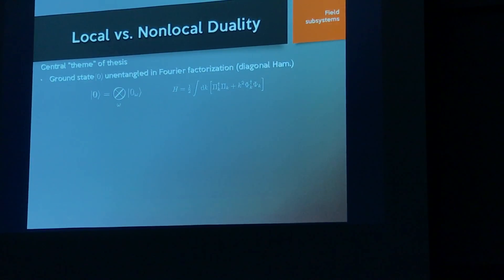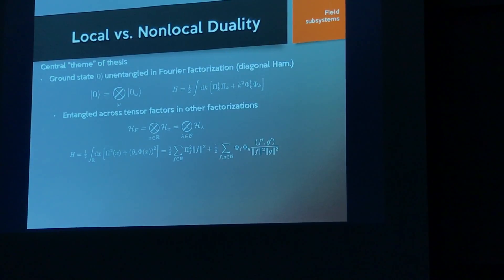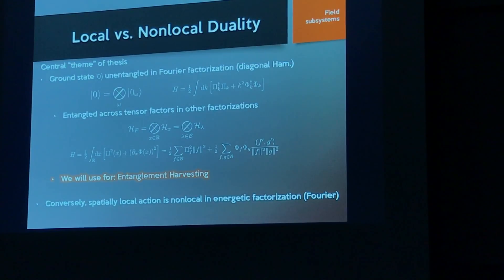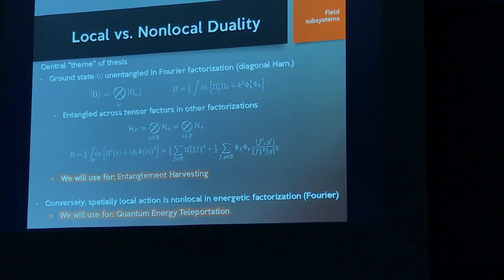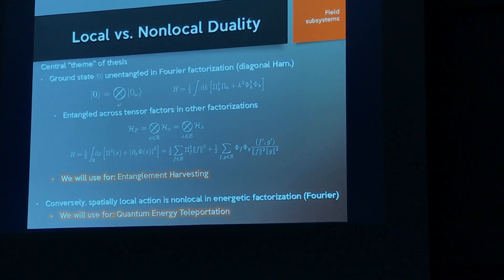The central theme of the thesis is what I call the local versus non-local duality. The ground state is unentangled in the Fourier factorization — the Hamiltonian is diagonal so it's a product state of ground states. But with couplings, there's entanglement across tensor factors, which we use for entanglement harvesting between different smears. Conversely, a local operation of compact support is non-local in Fourier space — something local in space is non-local energetically — and that's what we use for quantum energy teleportation.